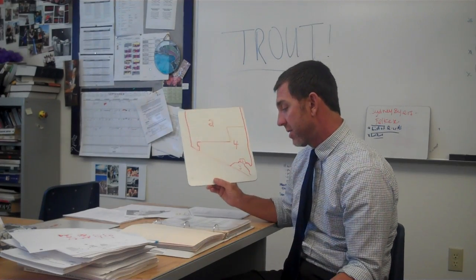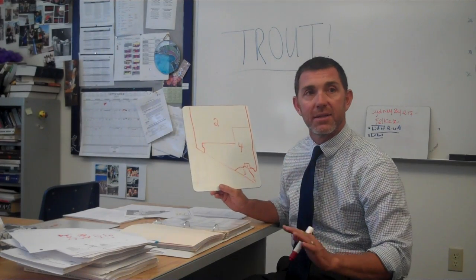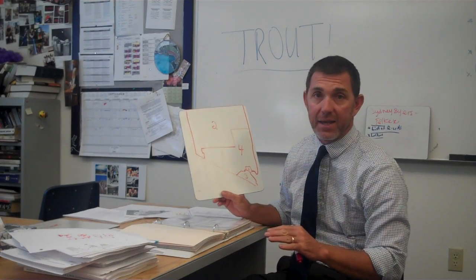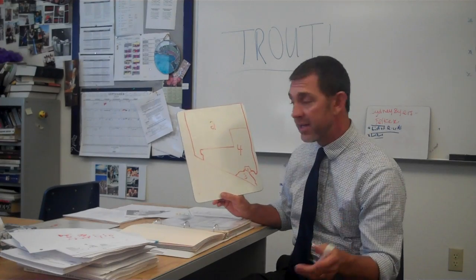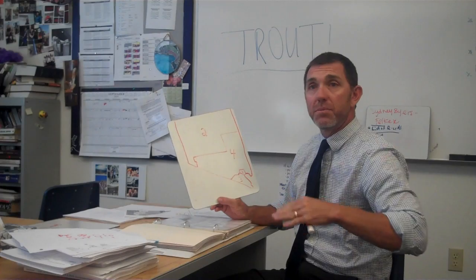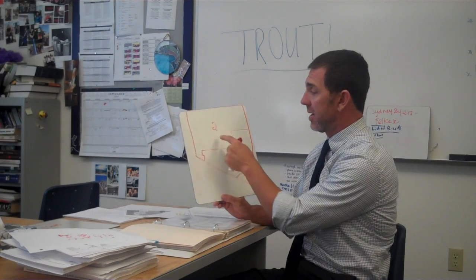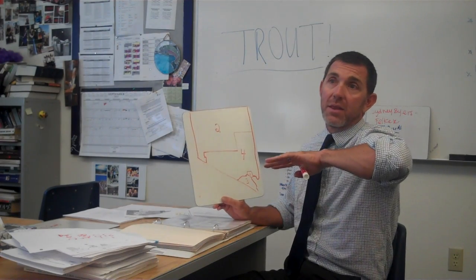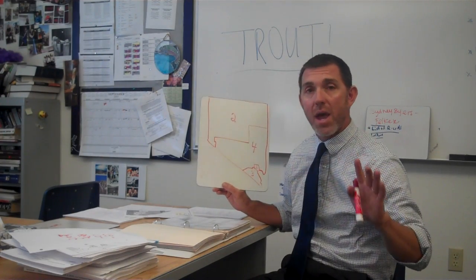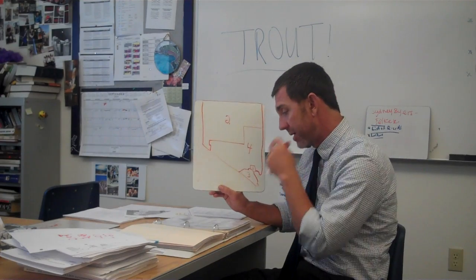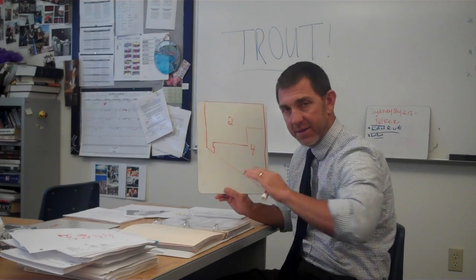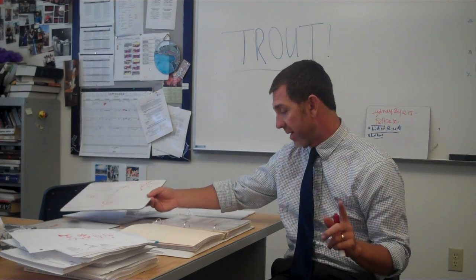Gerrymandering — these district lines are drawn with a lot of fighting because of demographics. If you draw a line that includes people more likely to vote Republican, a Republican will win; if lines favor Democrats, a Democrat will win. A lot of these districts are drawn in a way that benefits existing incumbents. We'll get way into gerrymandering when we study Congress.